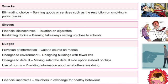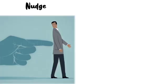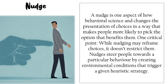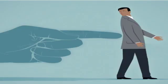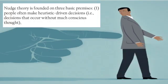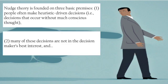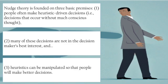As a quick reminder about nudges: the whole point is to steer people toward a particular behavior by creating environmental conditions that trigger a given heuristic strategy. It's based on three basic premises: people often make heuristic-driven decisions without much conscious thought, and those decisions are sometimes not in the maker's best interests — therefore nudge theory can be used to help people make better decisions.